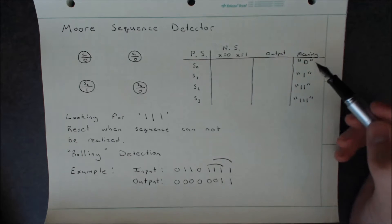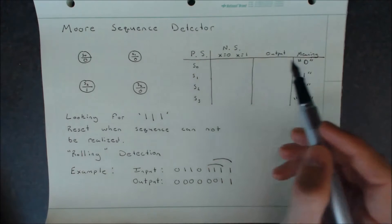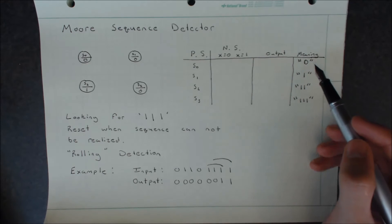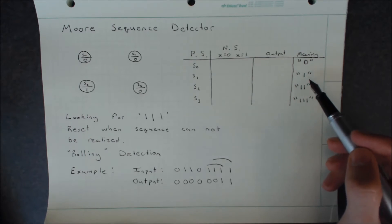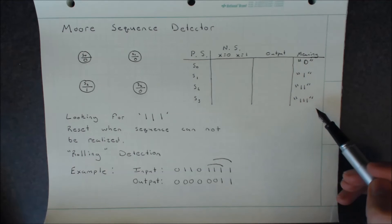We also have meanings already defined for each of these states. When we're in S0, this will be kind of a reset state where this means that we've received a 0. S1 will denote the meaning that we've received a single 1. S2 will denote the state where we've received two 1s in a row. And finally, S3 will receive the state where we've achieved our target of three 1s in a row.